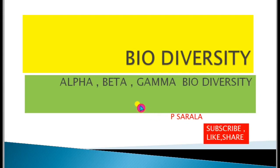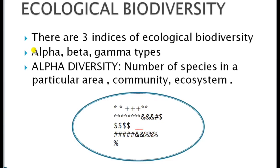Welcome. Today we will learn another concept of biodiversity — the indices of ecological biodiversity — which are alpha, beta, and gamma diversities. Alpha diversity is the number of species in a particular area, community, or ecosystem. By counting the number of different species present in a given area or ecosystem, we can measure the alpha biodiversity.